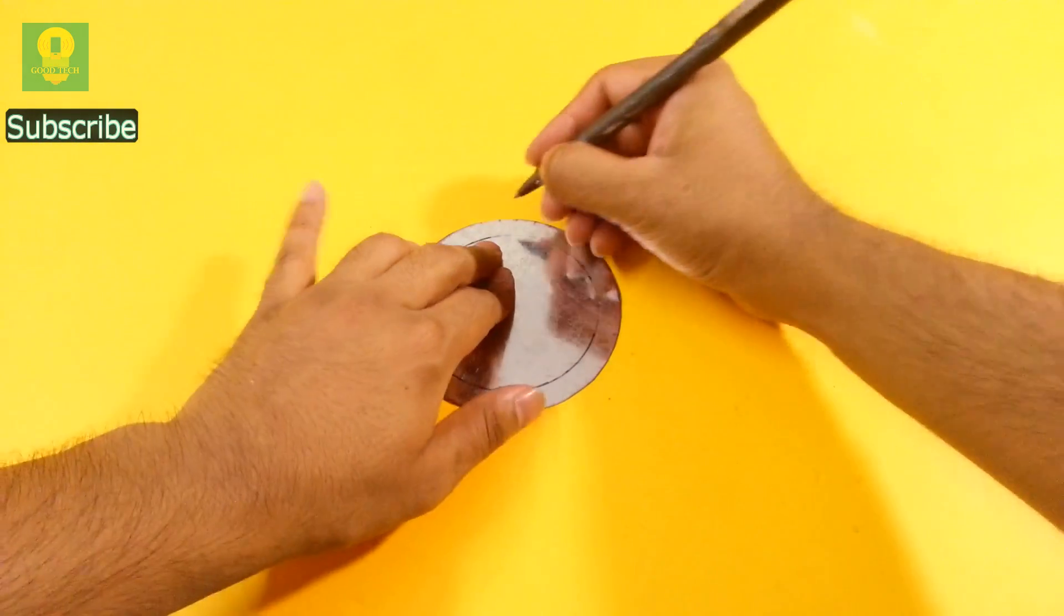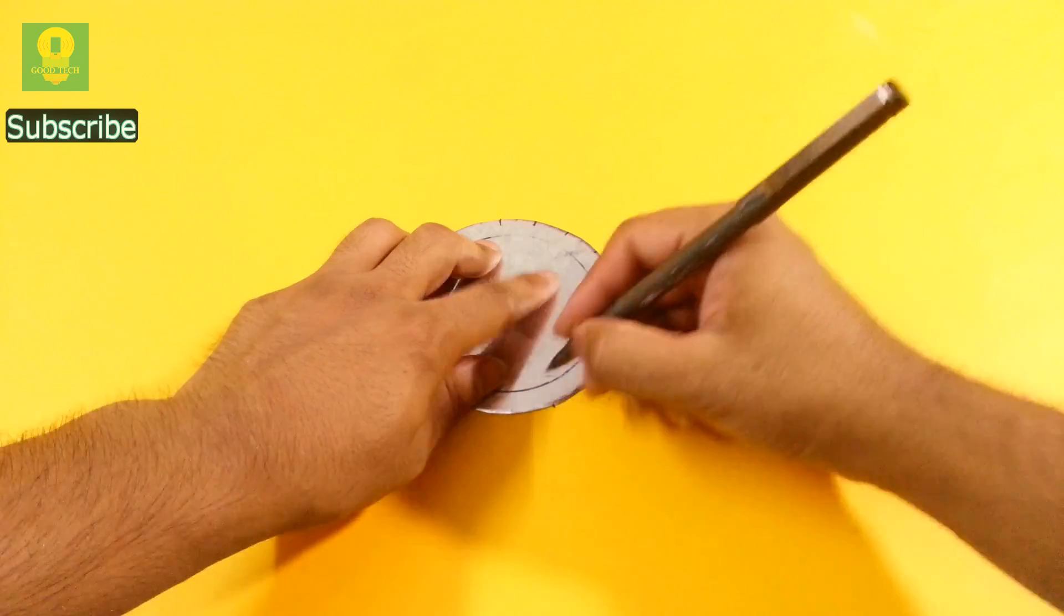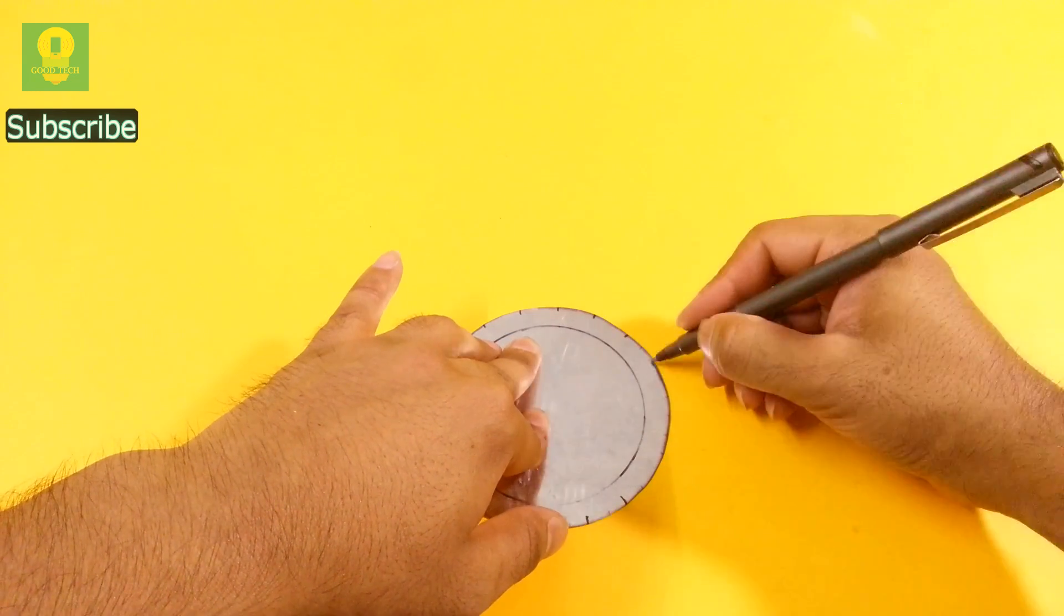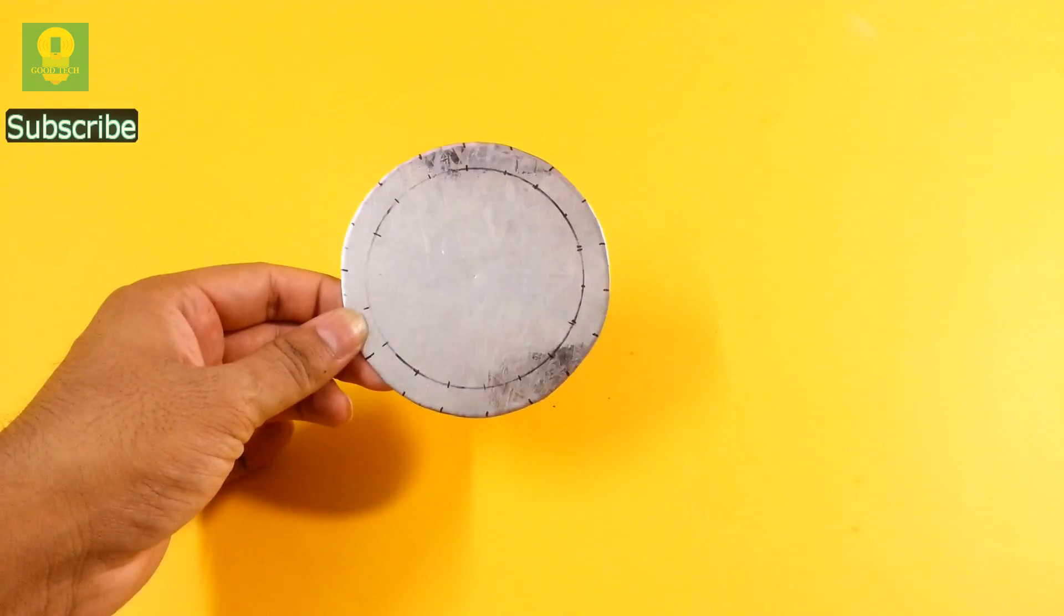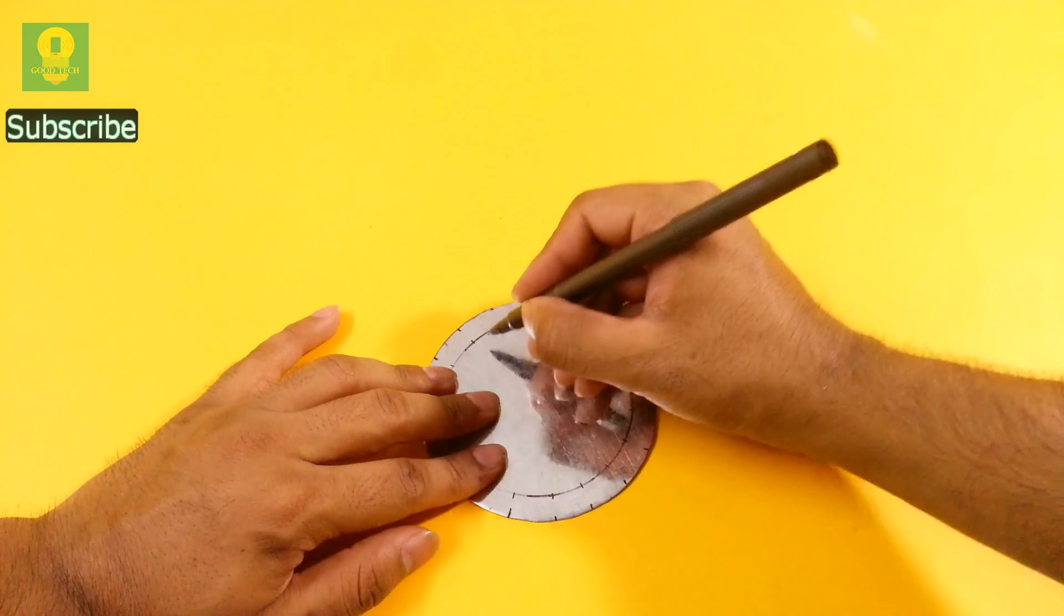Mark 18 equidistant points on both the circles. Draw the design of the cutting blade.